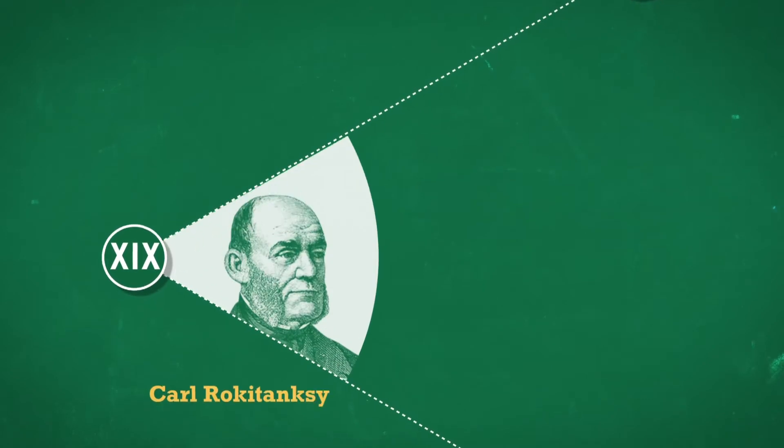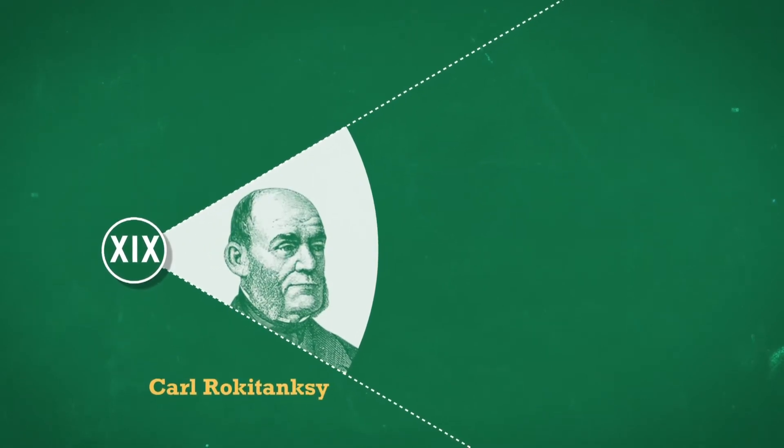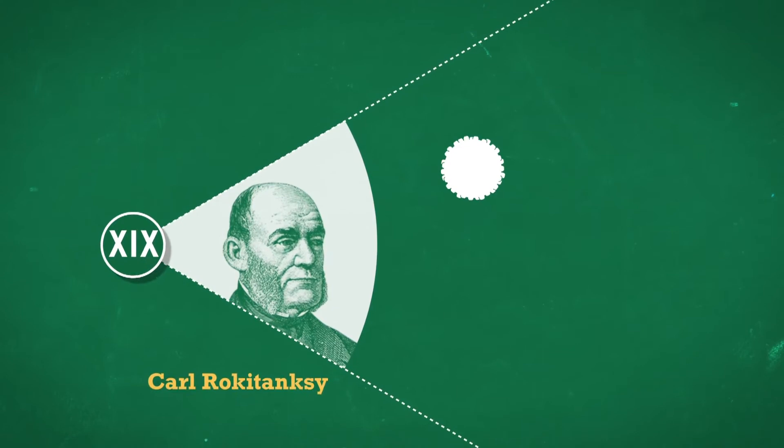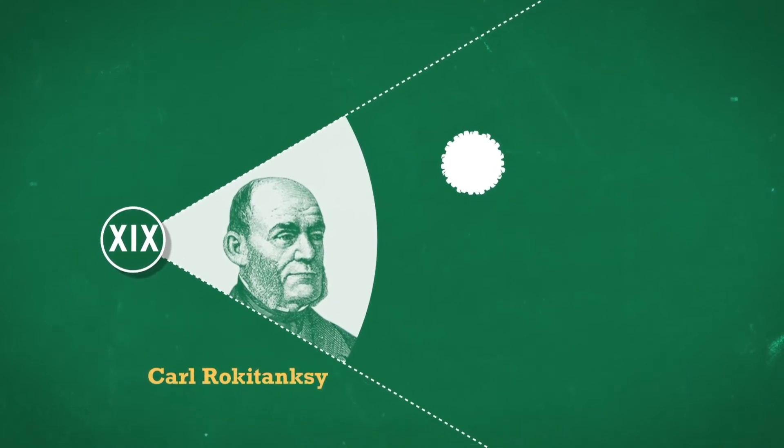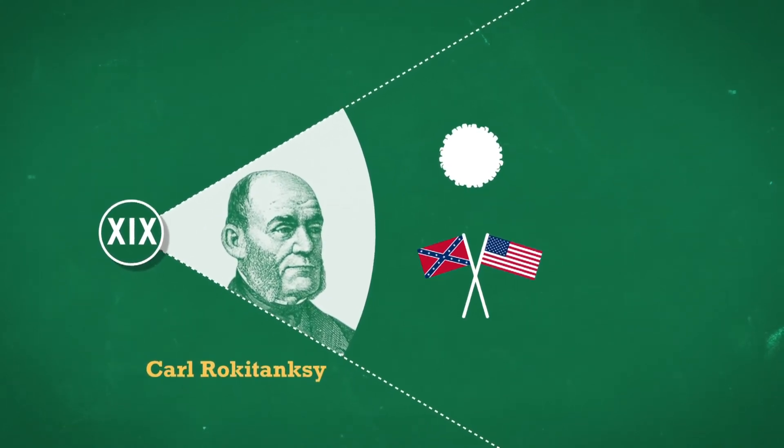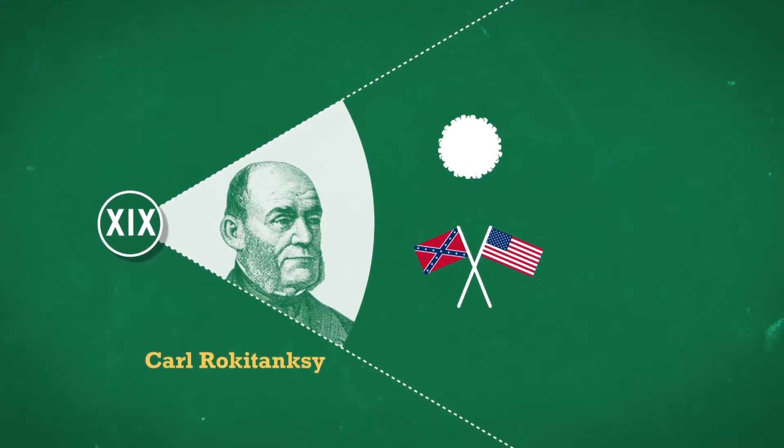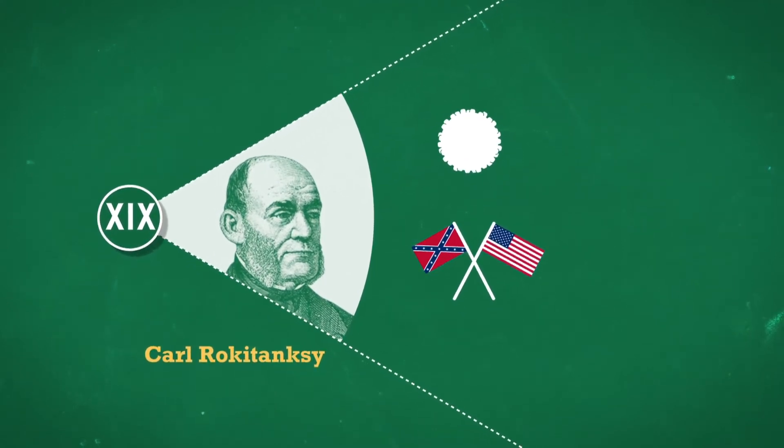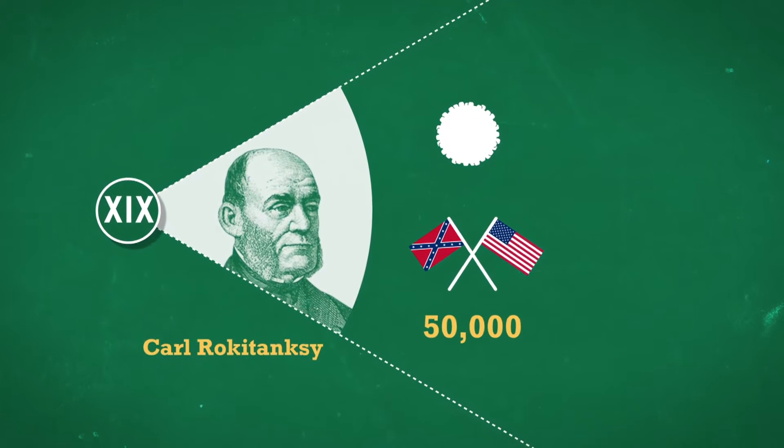In the middle of the 19th century, Czech Karl Rogatonski was the first to describe the hepatitis virus. Soon after, the United States was engulfed in civil war and soldiers were decimated by hepatitis. In four years, there were over 50,000 cases.